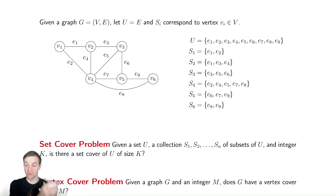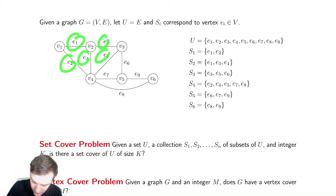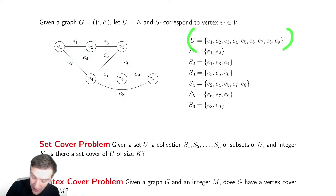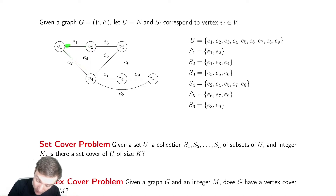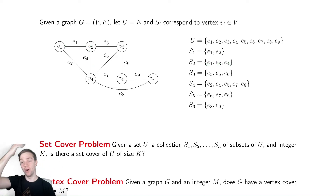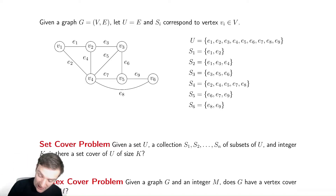We're going to take a graph from our vertex-cover problem and reduce it to a set-cover problem. Given a graph, we define our set as the set of all edges — E1 through E9. Our vertices correspond to the subsets, defined by which edges are incident on each vertex. So V1 is incident on E1, E2; V2 is incident on E1, E3, E4, and so on for all vertices.